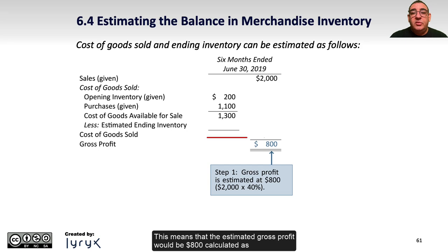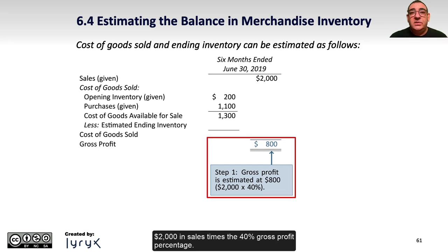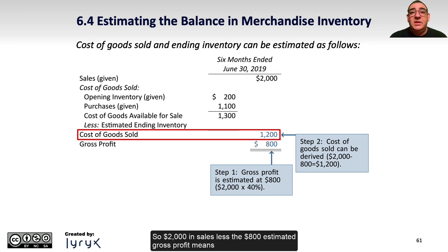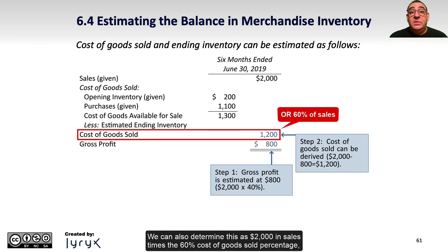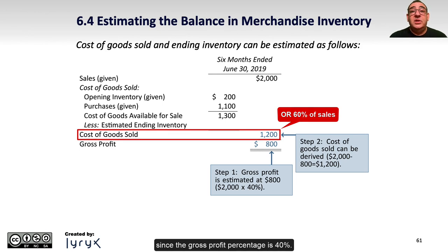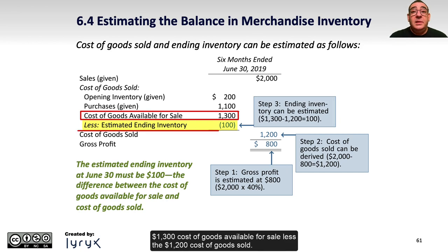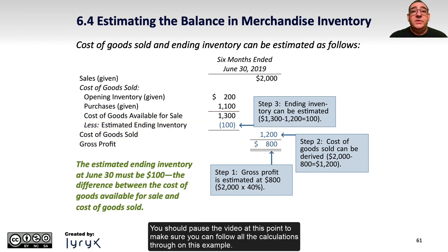The estimated gross profit would be $800, calculated as $2,000 in sales times the 40% gross profit percentage. Then we can determine that cost of goods sold must be the difference between sales and gross profit: $2,000 in sales less the $800 estimated gross profit means cost of goods sold is estimated to be $1,200. We can also determine this as $2,000 in sales times the 60% cost of goods sold percentage, since the gross profit percentage is 40%. Then we can determine the ending inventory must be $100, based on the $1,300 cost of goods available for sale less the $1,200 cost of goods sold. You should pause the video at this point to make sure you can follow all the calculations through on this example.